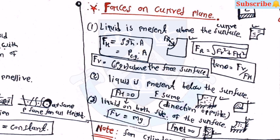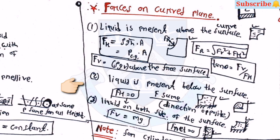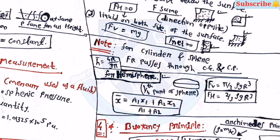For forces on a curved plane: when liquid is present above the curved surface, Fh equals rho-g-h-bar into A, which equals p-h-cg into A, and Fv equals rho-g times volume above the free surface. Fr equals square root of Fv-squared plus Fh-squared. Tan-theta equals Fv by Fh. When liquid is present below the surface, Fh equals zero. When liquid is on both sides, Fv equals m into g and F-net equals zero. For cylinders and spheres, Fr passes through the centroid.